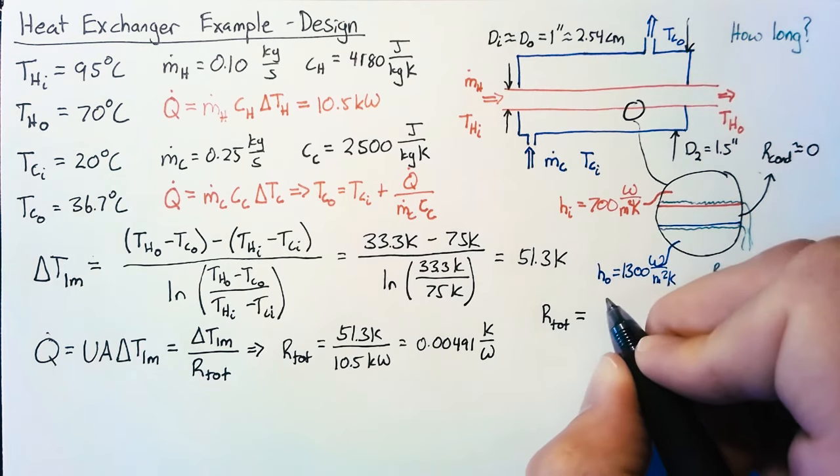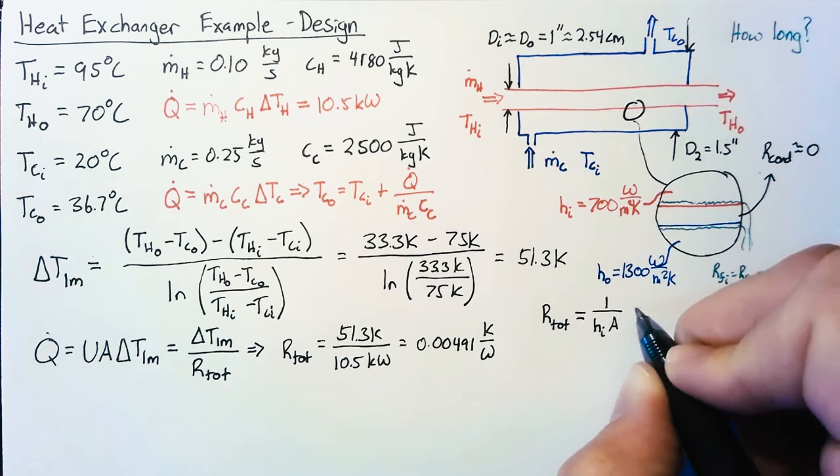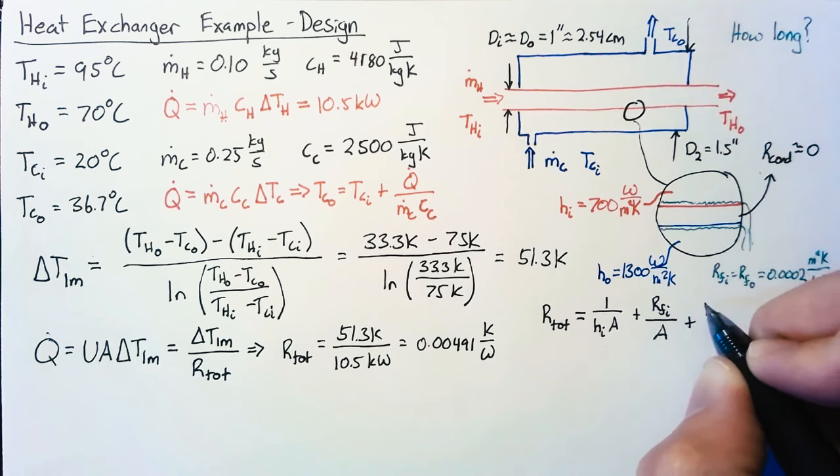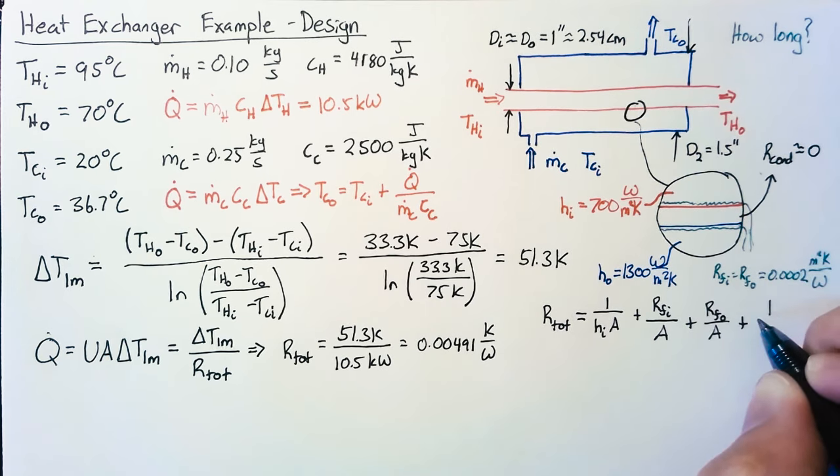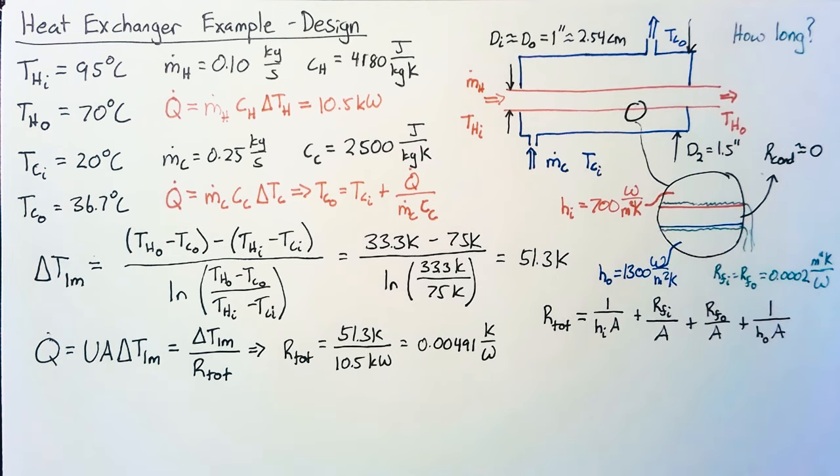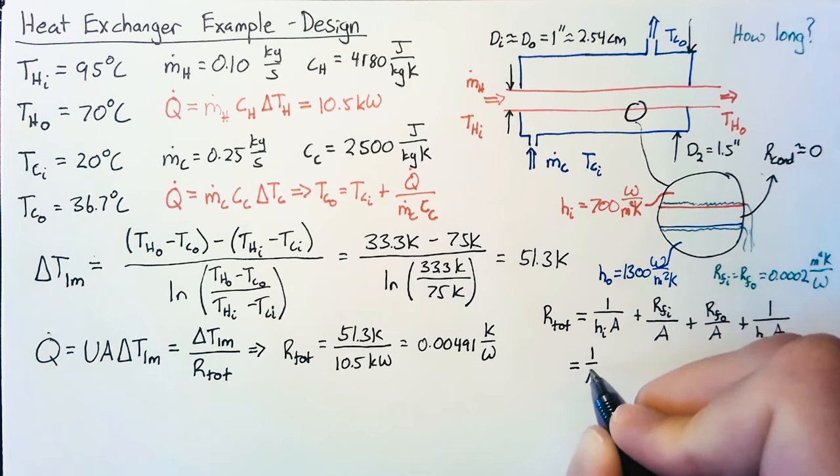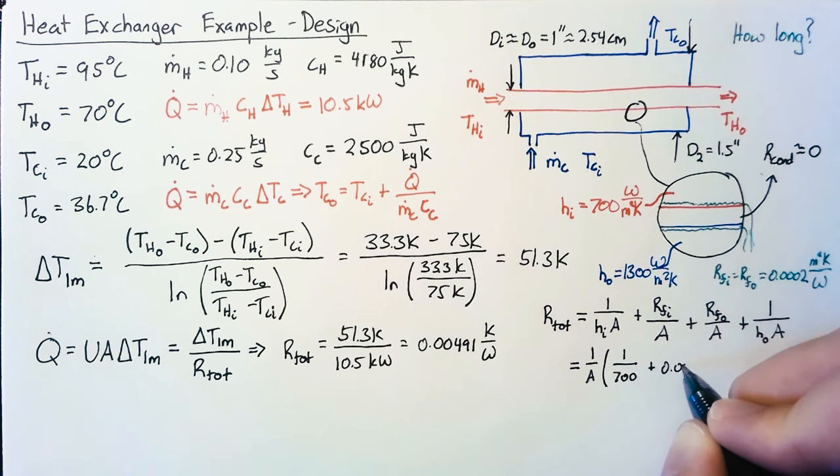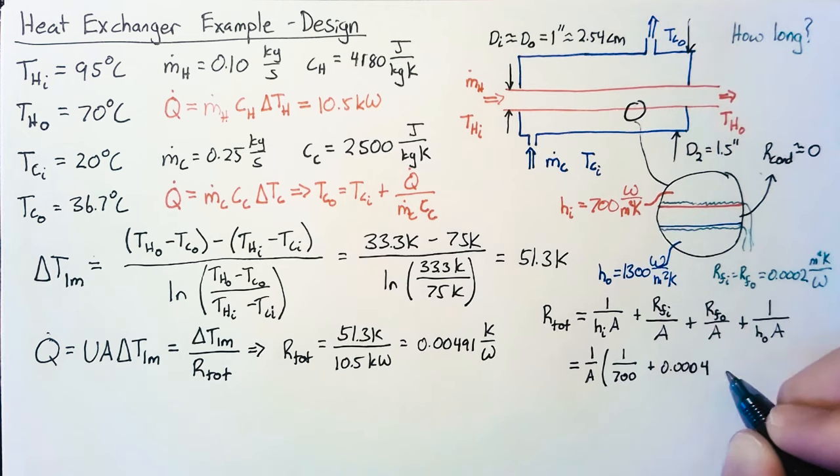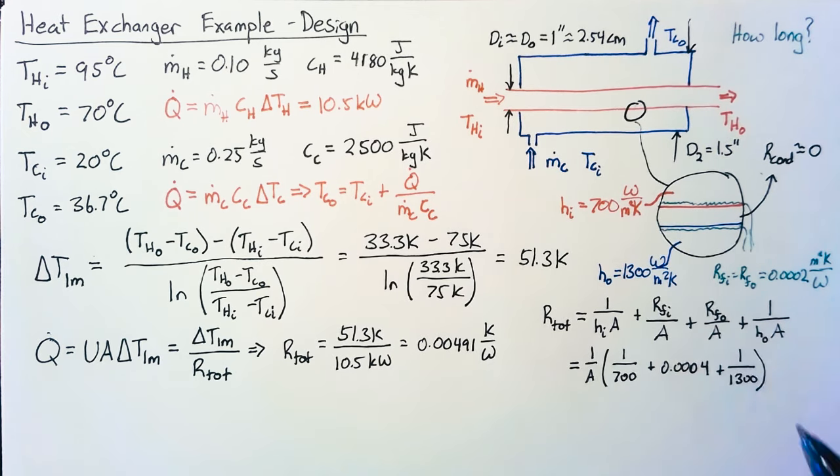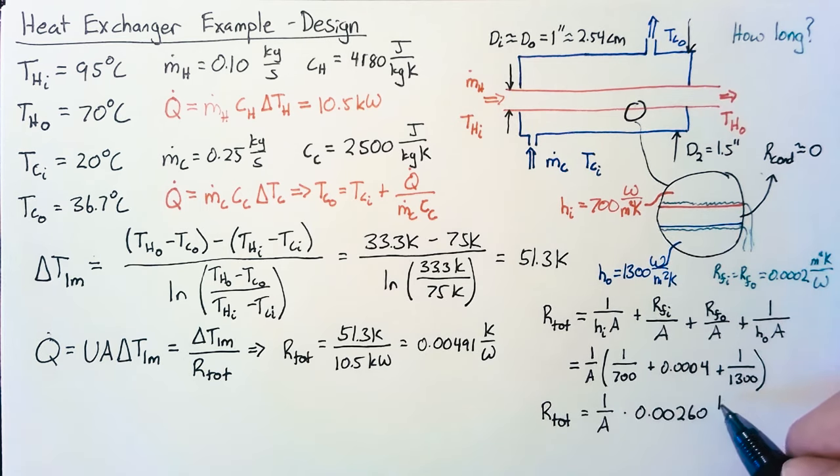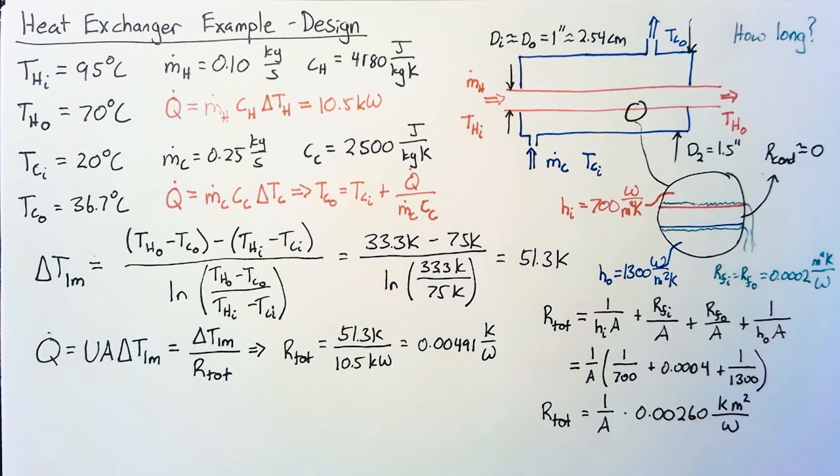Our total thermal resistance is 1/(h_in*A) + R_f_in/A + R_f_out/A + 1/(h_out*A). The first thing you should notice is that each of these terms has an A in the denominator. So we can simplify substantially just by taking out that A. Then we end up with 1/700 plus 0.0002 plus 0.0002, I can add both these together to get 0.0004, plus 1/1300. We'll have a good value for our total resistance: 1/A times 0.00260 Kelvin meter squared per watt. We're leaving that meter squared there because we have this area term in the denominator to cancel it out.